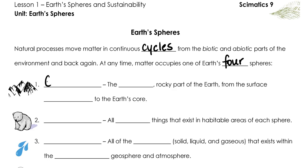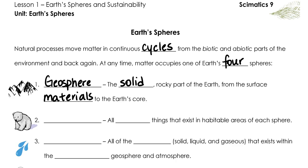The first sphere is called the geosphere. This is the solid rocky portion of the Earth from the surface materials to Earth's inner core. The geosphere encompasses all portions of this planet made of rock. Even soil belongs to the geosphere. The only difference between a soil like sand and a soil like clay is how fine that particle of rock has become over time. Sand is a very coarse grain, silt is a fine grain, and clay is even finer still.